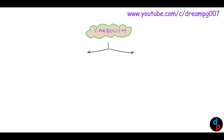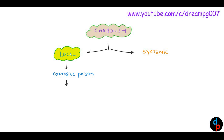Let's have a look at the local and systemic effects of Carbolic Acid. Carbolic Acid is a corrosive poison and it leads to corrosion of the lip, mouth, and GIT. In postmortem, it will give a brownish leathery appearance in the stomach.